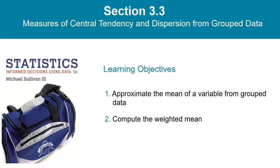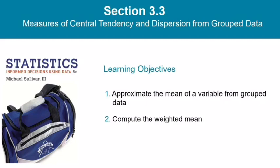Hello again everybody. Today we are in section 3.3, and we're going to be talking about measures of central tendency and dispersion from grouped data – that is, data that's in a frequency distribution. In this section, I'll show you how to approximate the mean of a variable from grouped data, and I'll also show you how to calculate a weighted mean. I'll show you how to do this both by formula and by calculator.